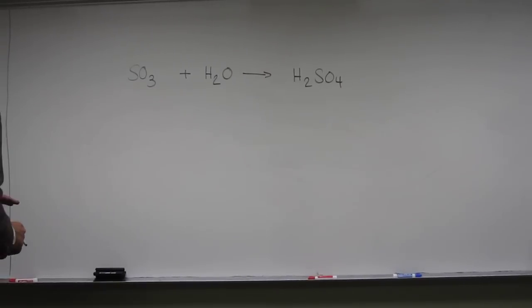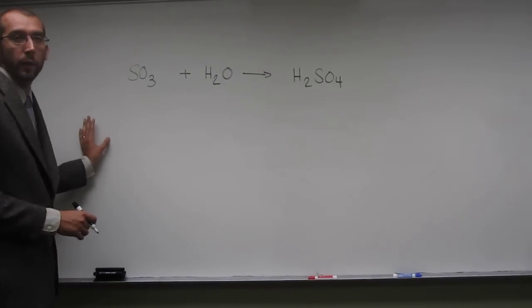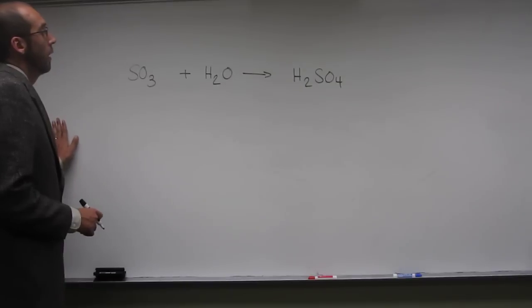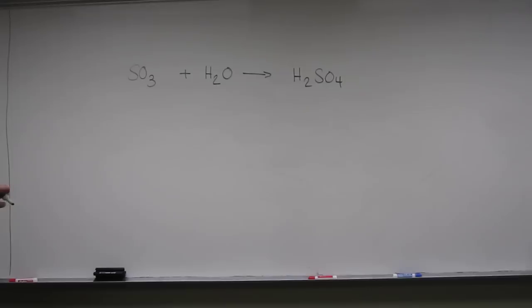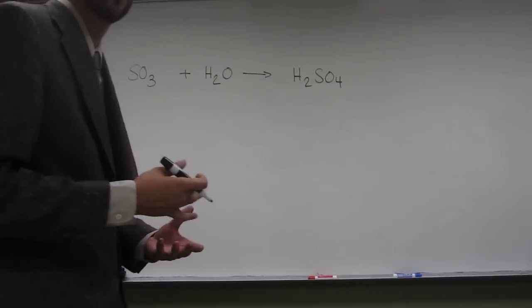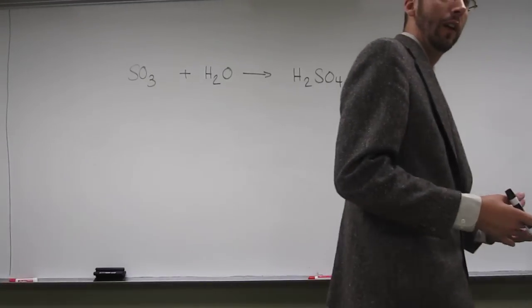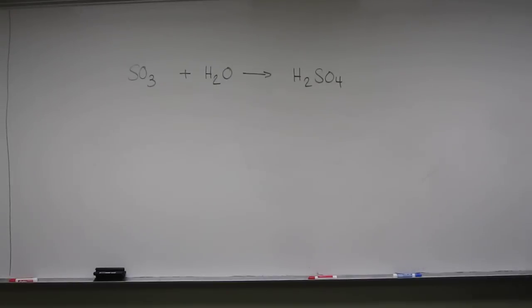So this is another one of those identify the Lewis acid Lewis base pairs. In this case you see we have two molecules reacting to form one molecule. So in those two molecules we're going to have one that's an electron donor and one that's an electron acceptor. If you remember, the electron donors are going to be Lewis bases, the electron acceptor is going to be the Lewis acid.